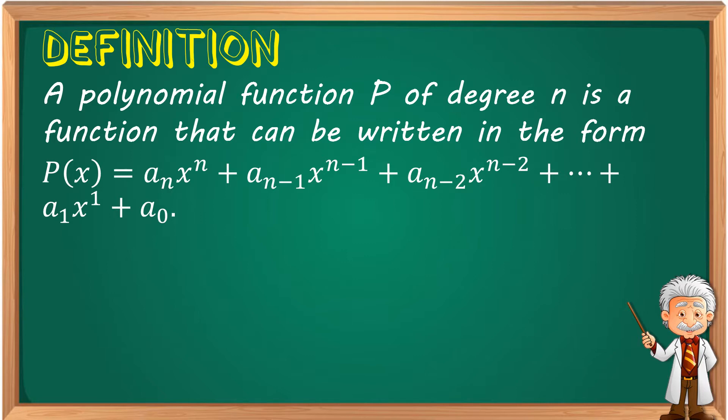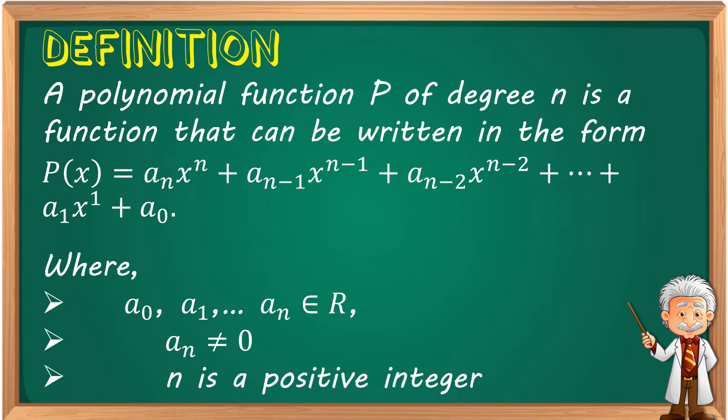plus a₀ where a₀, a₁, aₙ are all elements of real numbers. aₙ cannot be equal to 0 and n is a positive integer.